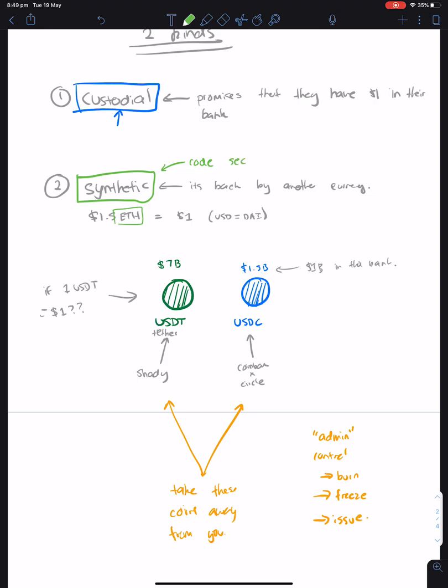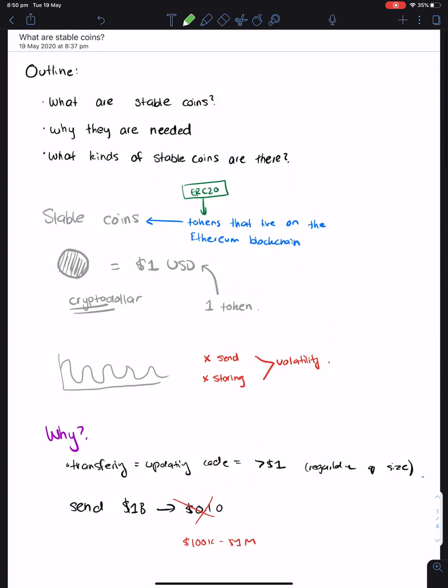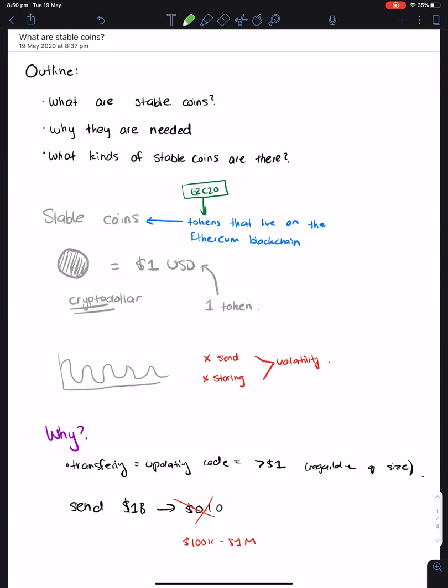The problem with synthetics is: is the code secure? Really, there's no perfect stablecoin, only stablecoins with different kinds of risks. The stablecoin you use exposes you to a different kind of risk.